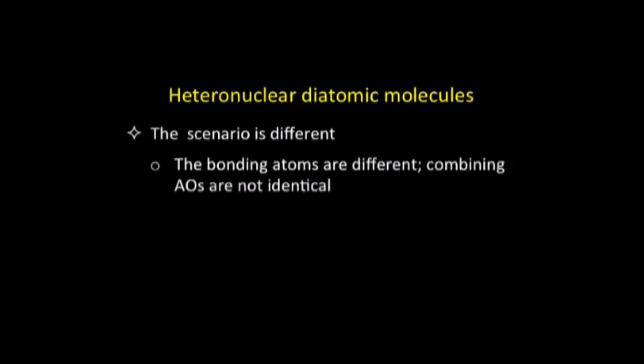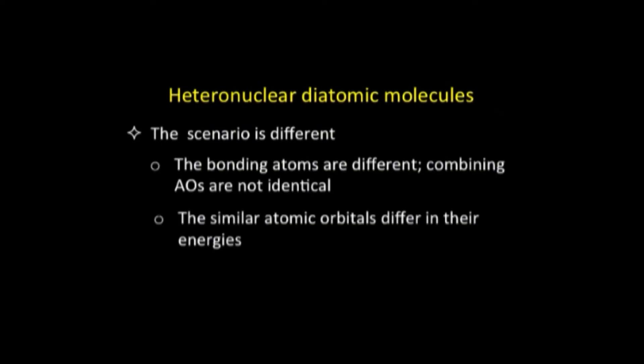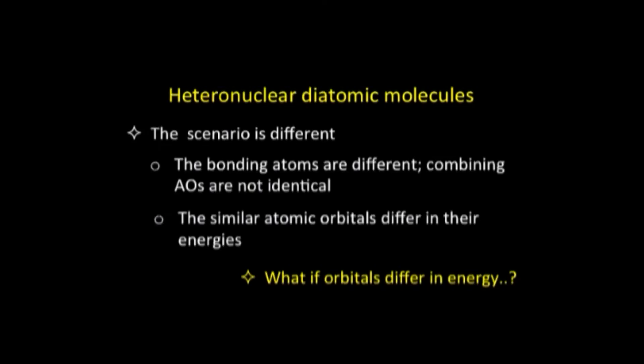In case of heteronuclear diatomic molecules, the scenario is a little different. There are two atoms, but these two atoms belong to different elements. Since the two atoms are different, the combining atomic orbitals will not be identical. Suppose one is hydrogen and one is lithium or fluorine — the atomic orbitals which are going to combine will not be identical, and it may so happen that the combining atomic orbitals are similar in type but differ in energies. Let us look at this aspect in a little more detail: what will happen if orbitals differ in their energy?